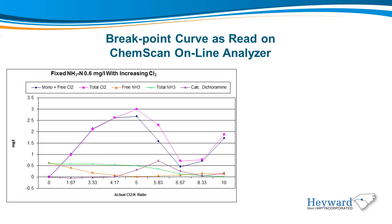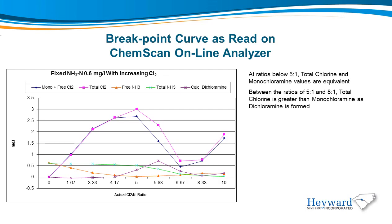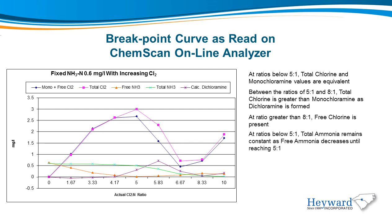This is the breakpoint curve as read on the ChemScan analyzer. In this case, a 0.6 mg per liter ammonia sample was dosed with increased levels of chlorine. When the ratio is below 5-to-1, total chlorine and monochloramine values are equivalent. Between the ratios of 5-to-1 and 8-to-1, total chlorine is greater than monochloramine as dichloramine is formed. At ratios greater than 8-to-1, free chlorine is present. At ratios below 5-to-1, total ammonia remains constant as free ammonia decreases until reaching the 5-to-1 ratio. At ratios greater than 5-to-1, total ammonia decreases and free ammonia remains near zero.